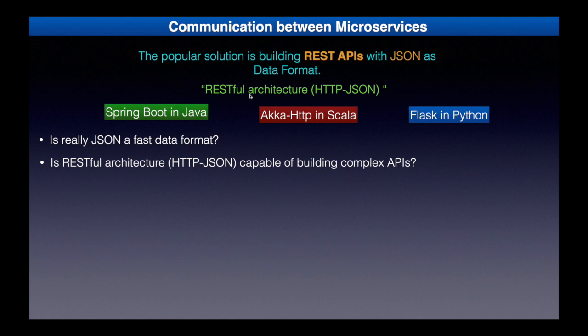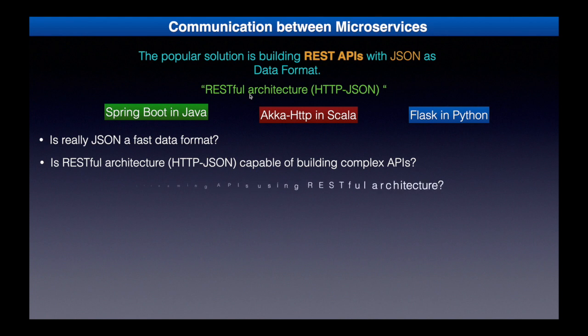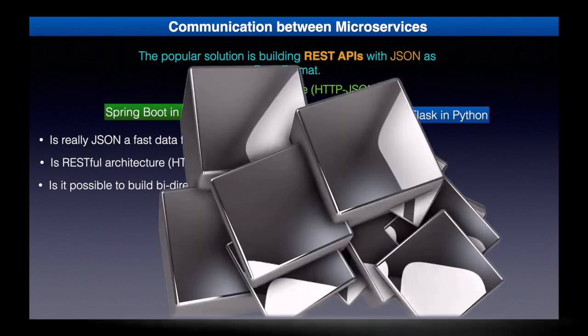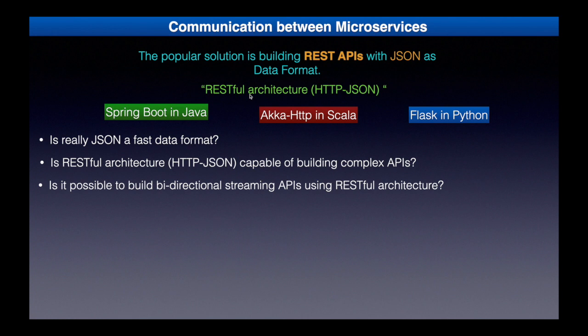Is RESTful architecture capable of building complex APIs? No. When implementing microservices, we need to consider a lot of factors like logging, tracing, and load balancing of requests — all very complicated. RESTful architecture doesn't fully provide the capabilities needed to build microservices. Also, building bi-directional streaming APIs using RESTful architecture is not possible, because it uses HTTP 1 protocol, which is not bi-directional. However, HTTP version 2.0 provides the capability of bi-directional streaming of data between applications.